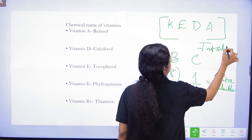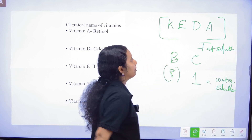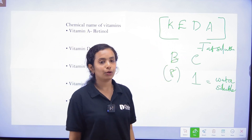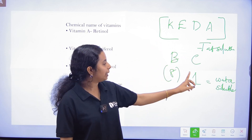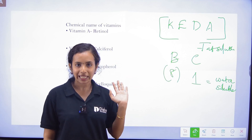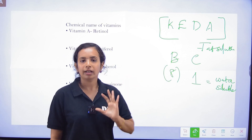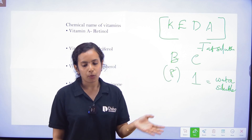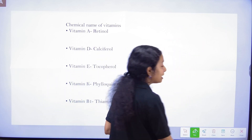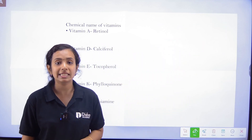To remember the fat-soluble vitamins, use the code: A, D, E, K. The water-soluble vitamins are B-complex and C — we can remember that as a B-C-N code.